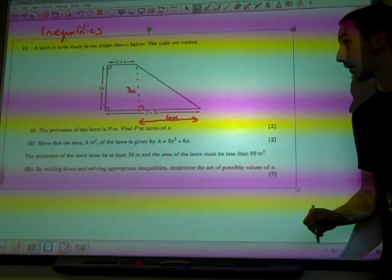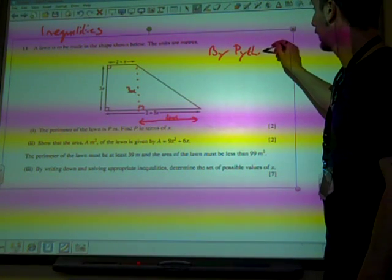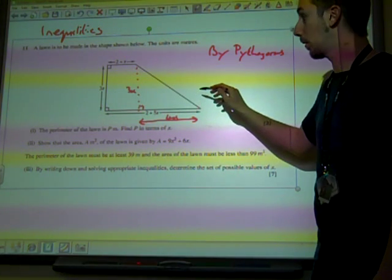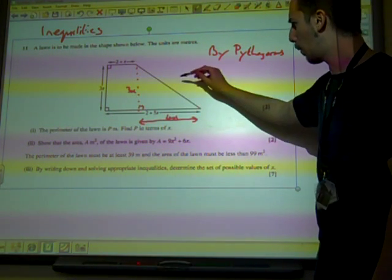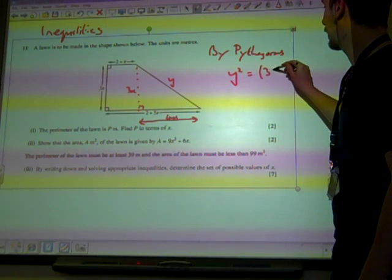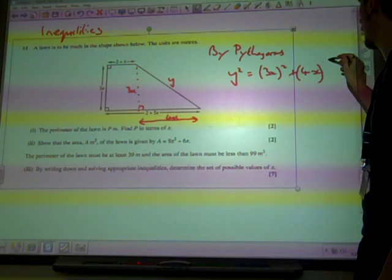And so using Pythagoras' theorem, we've got that side squared, can we call that Y for now? Y squared is 3X when you square it, plus 4X when you square it.